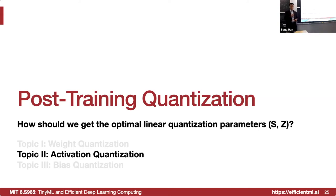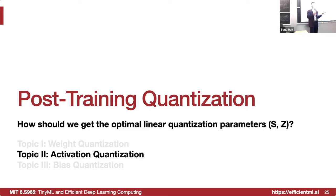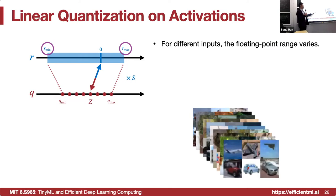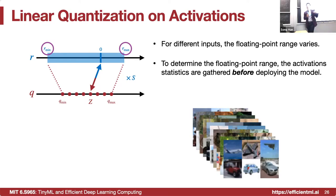Now let's switch to quantizing the activations. The key difference between weight and activation quantization is that weights are static — you can determine their range at compile time. But activation range varies for different inputs: a certain image may have a small range while another has a large range. So to determine the floating-point range for activations, we have to collect statistics before deploying the model — feeding roughly 100 or 500 images to determine the mean and max.